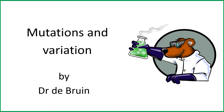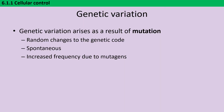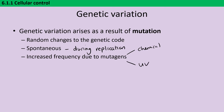This video is an introduction to the different types of mutation, both in terms of how they arise and what's actually going on with the DNA, and also the effects they have on protein function. Genetic variation arises as a result of mutation, which is random changes to the genetic code. This can occur spontaneously during replication when it's possible for an incorrect base to be inserted, but the frequency of these mutations can also be increased by exposure to mutagens, including various chemicals and UV radiation.